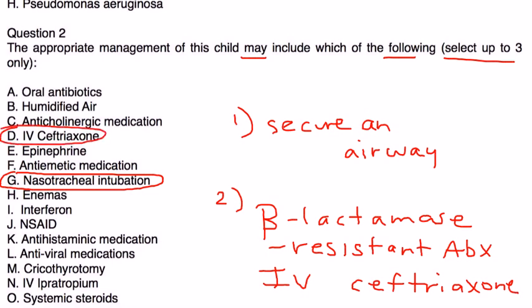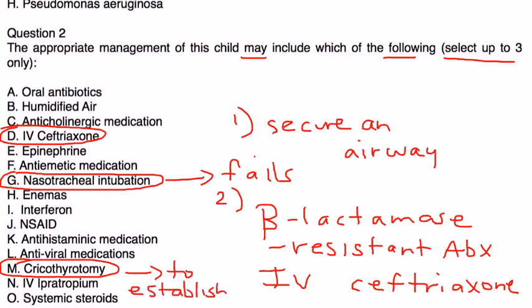Now they're saying select up to three, so we have to choose one more. If this is unsuccessful, if this fails, if you are unable to do the intubation, then you would proceed to a cricothyroidotomy. And this essentially is an incision through the cricothyroid membrane to establish a patent airway. Hopefully you won't need to progress to that stage. Hopefully these two are enough, but choice M may be necessary.